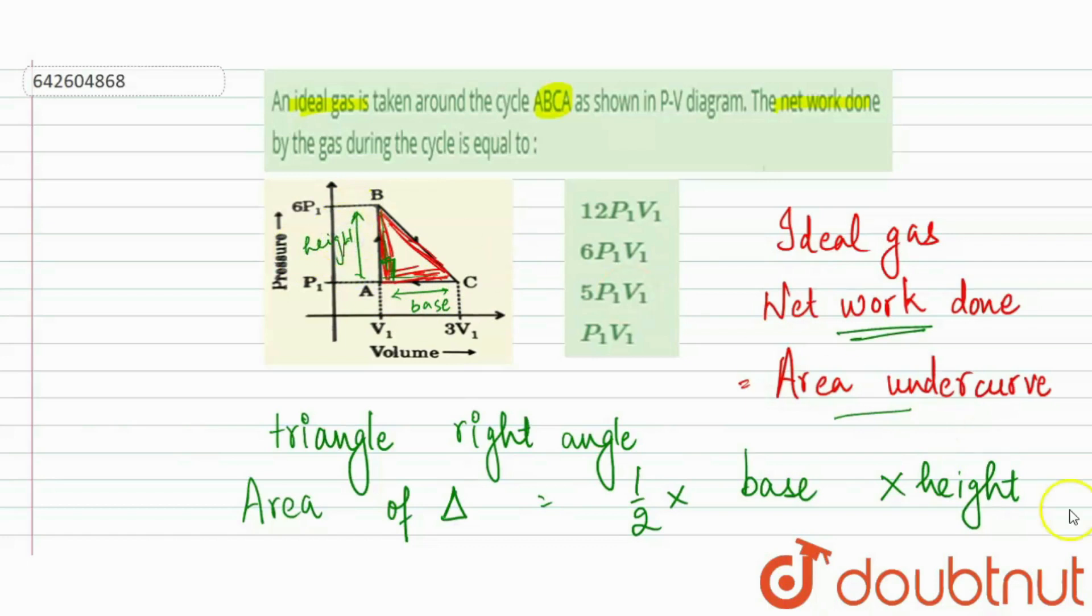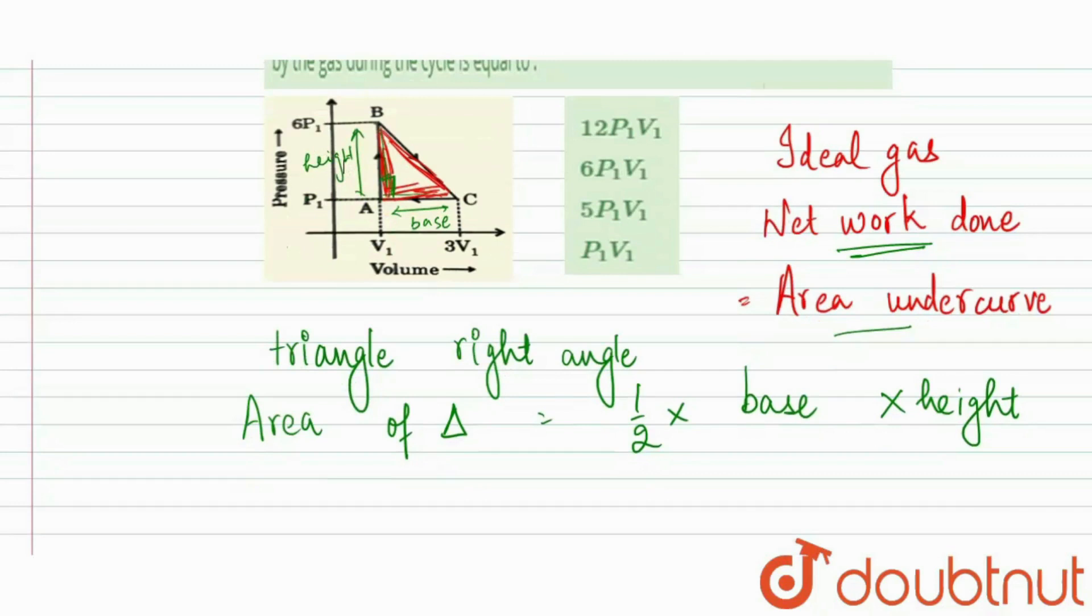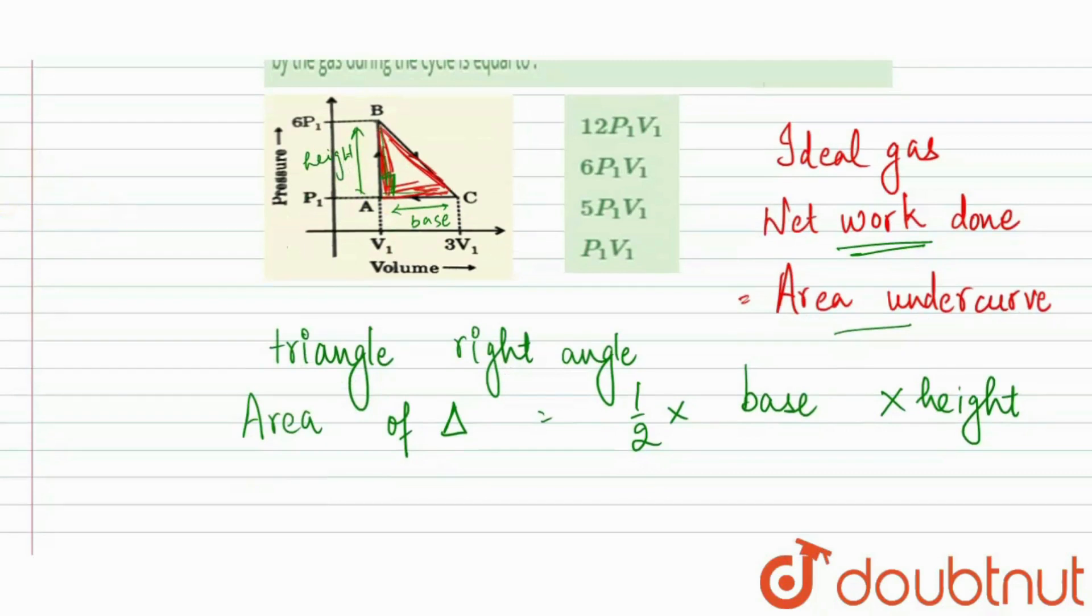So in the base, we will have now half into one by two into, now in the base we have 3V1 AC points. So AC will be 3V1 minus V1 and height is this one, BA. So it will be 6P1 minus P1.